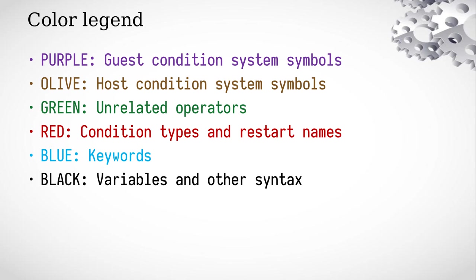Our presentation needs a color legend because of the large number of symbols that have the same name but are from different packages. Purple ones are the guest condition system symbols — so PCS:error names the error function from the PCS package. Olive symbols are host condition system symbols — so CL:error names the host error function. The rest of the colors are syntax: green for unrelated operators such as defun and defmethod, red for condition types and restart names, blue for keywords, and black for everything else.